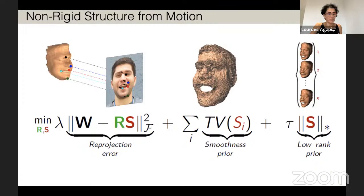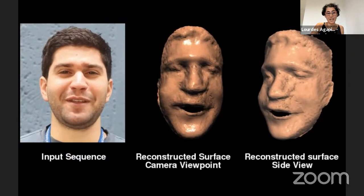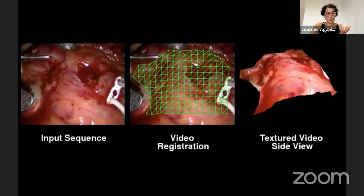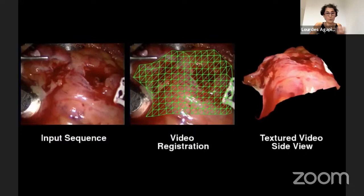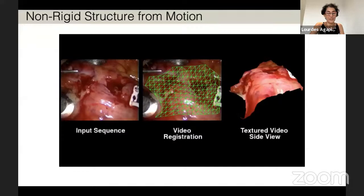Here are some results on face reconstruction. What was exciting at the time, and even exciting now, is that we were learning the priors and learning this low-rank representation at the same time as optimizing the shapes in the sequence. Because we didn't have a pre-trained embedding, this was the embedding we were learning at the same time. We could apply it to any kind of data — it was completely agnostic of the objects we were looking at.